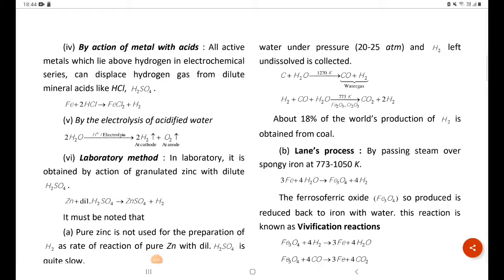Hello friends, welcome to my channel Study Zone Never Stop Learning. So let's continue the hydrogen chapter. Lane's process: by passing steam over spongy iron at 773 to 1050 K.